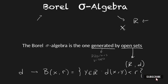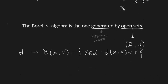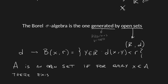And so we say that a set A is an open set if for every x in A there exists a radius r for which the ball with center in x and radius r is completely contained in the set A. So this is the definition of open set.